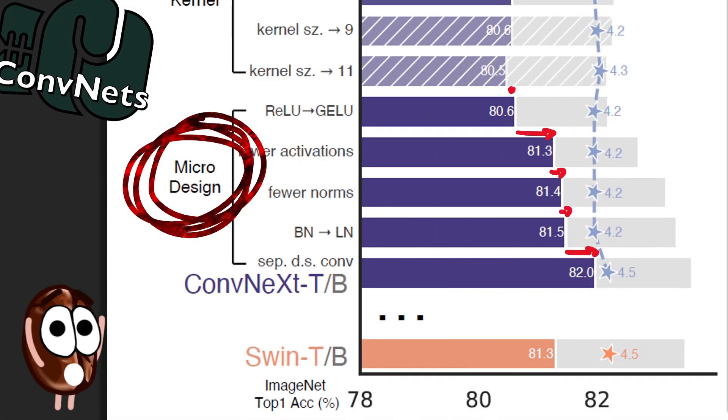And surprise! All these micro-modifications have a tremendous impact on performance, and by using separate downsampling layers, this enhanced resnet achieves an accuracy of 82.0 ImageNet top 1 accuracy, exceeding the SWIN transformer.